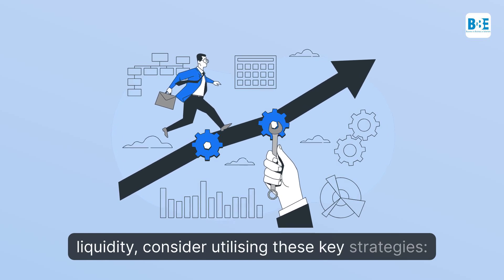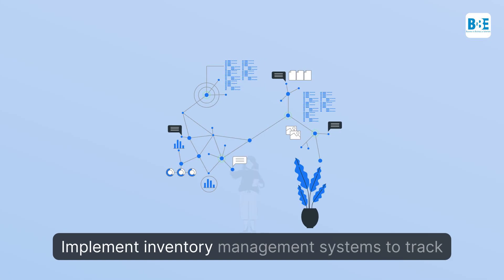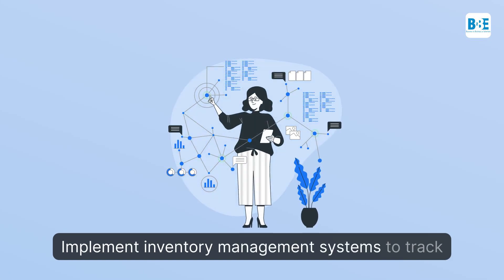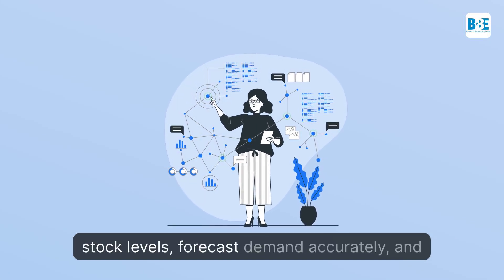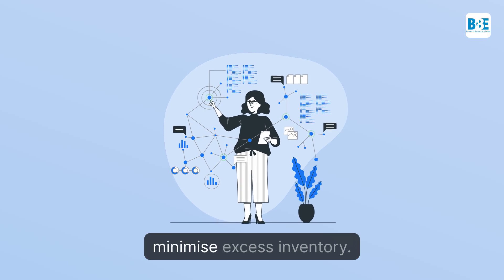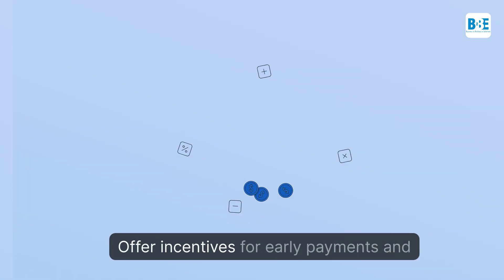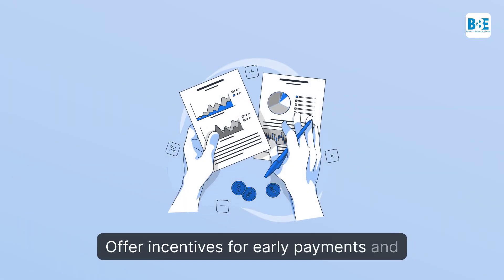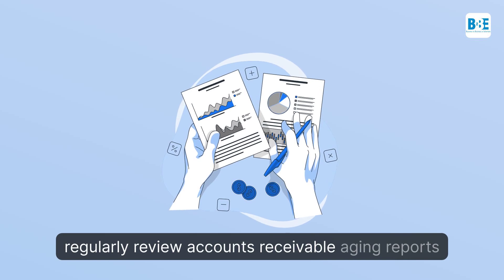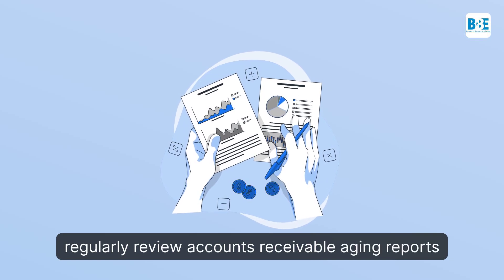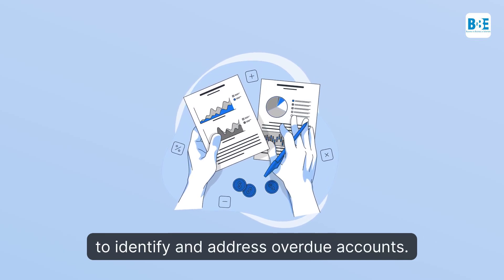To optimize working capital and improve liquidity, consider utilizing these key strategies. Implement inventory management systems to track stock levels, forecast demand accurately, and minimize excess inventory. Offer incentives for early payments and regularly review accounts receivable aging reports to identify and address overdue accounts.